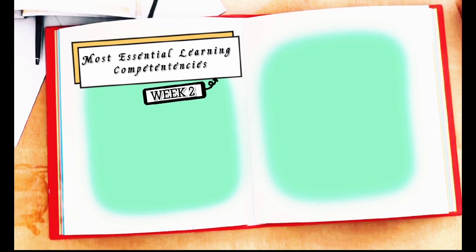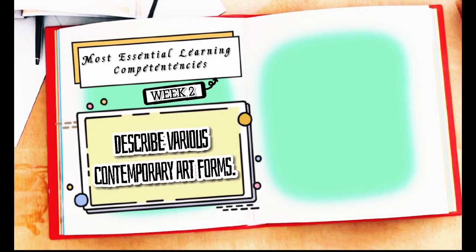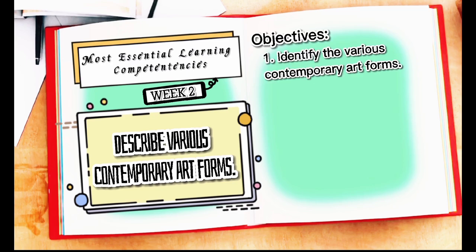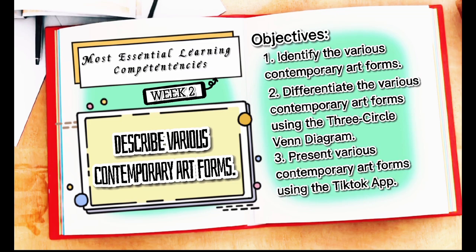Most essential learning competencies, week 2: Describe various contemporary art forms. Our objectives are: first, to identify the various contemporary art forms; second, to differentiate the various contemporary art forms using the three-circle Venn diagram; and third, to present various contemporary art forms using the TikTok application.